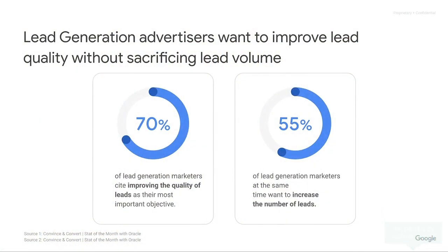Thank you very much, Connor. So we all know that lead gen advertisers now want to start improving quality without necessarily sacrificing lead volume. A recent study has shown that over 70% of lead gen marketers cite improving lead quality as their most important objective. However, we also see that 55% of this audience also want to increase the volume of leads. So people are looking away from it purely being about quantity and now want to improve the overall quality of leads.